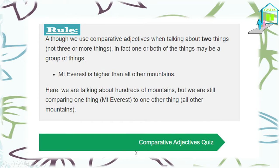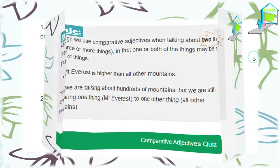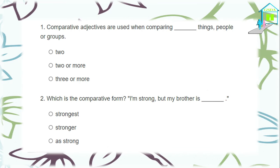Now let's move to practice the comparative adjective with this quiz. It's made of ten multiple choice questions to check your understanding of the lesson. First question: comparative adjectives are used when comparing — when comparing two things, two or more things, or three or more things? The best answer is two things, as we have seen. Very good — two things.